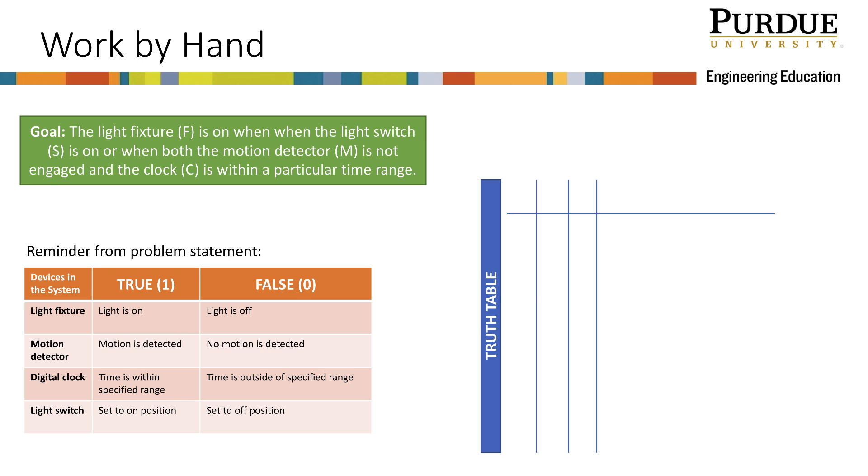We begin by considering all of the devices that control whether or not the light switch is on. These are the light switch S, the motion detector M, and the clock C. Now let's fill in the truth table with all possible combinations of the controls. First, all controls could be true, so I put a 1 in all of their columns. Then let's add all of the possibilities where only two of the controls are true. Next, let's consider all of the possibilities where only one of the controls is true. And finally, add the condition that all controls are false.